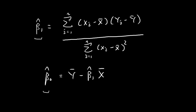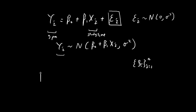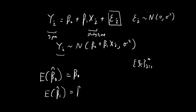Because the y terms follow a normal distribution, this formula causes β̂₁ to be a random variable as well, and the same goes for β̂₀. In that case, we can consider the expected values of these two terms, and we are going to show that these formulas give us unbiased estimators for β₀ and β₁ — meaning E[β̂₀] = β₀ and E[β̂₁] = β₁. This is what we're going to show in this video.